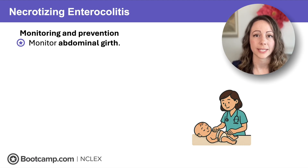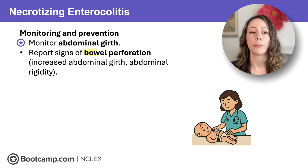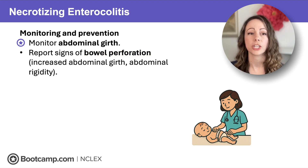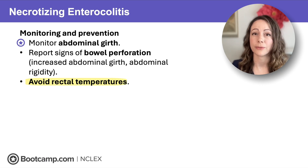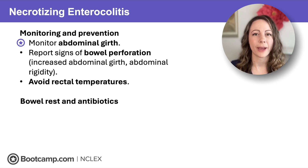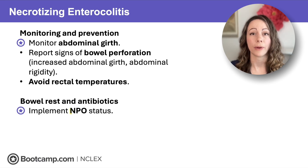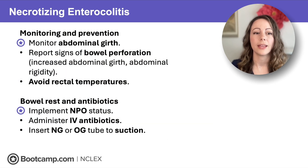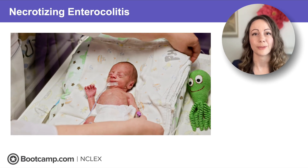Report immediately if abdominal girth is increasing, and watch for signs of bowel perforation, including increased abdominal girth and abdominal rigidity. Avoid rectal temperatures — NCLEX tip — because these clients are at risk for bowel perforation, and that probe can perforate the bowel. We need bowel rest and antibiotics: make them NPO right away to avoid introducing food into that inflamed bowel, administer IV antibiotics to fight the bacterial infection, and insert an NG or OG tube to suction and decompress the inflamed bowel.